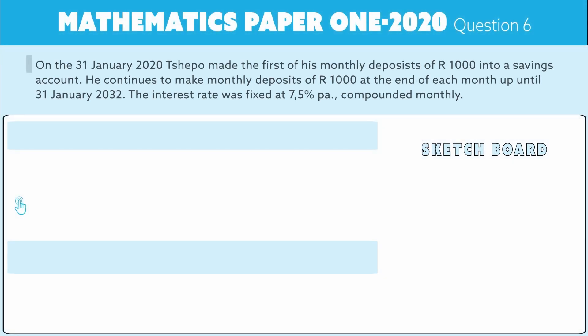Okay folks, we are on question six. Question six of the paper is a 16 mark question and it deals with the mathematics of finance. It's not a difficult section, but it can be tricky, so there are a few things I'm going to remind you about that you need to be aware of. Let's first read the question.